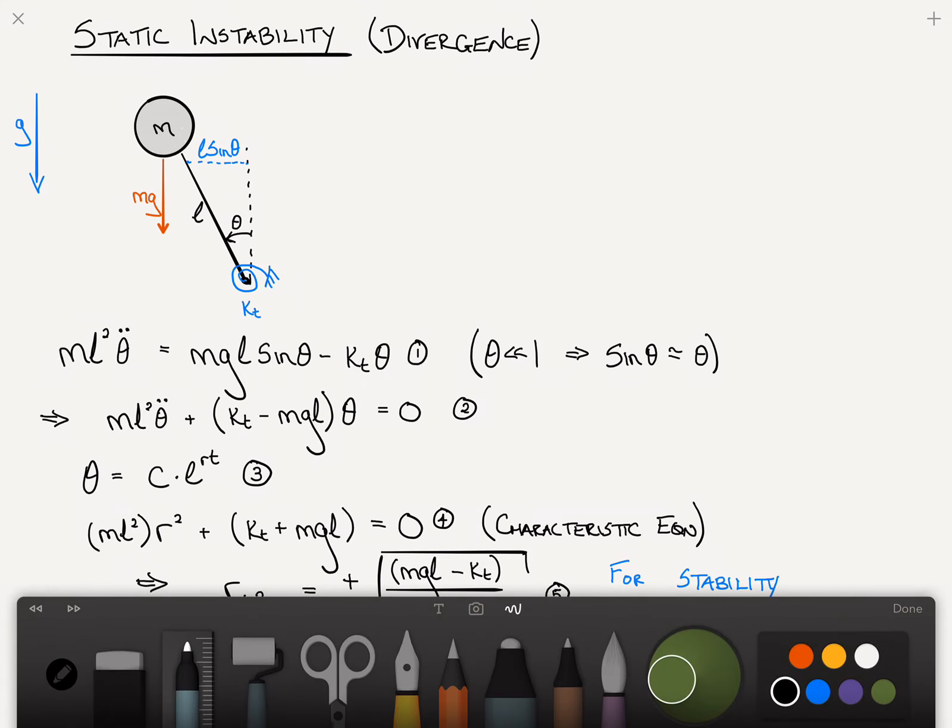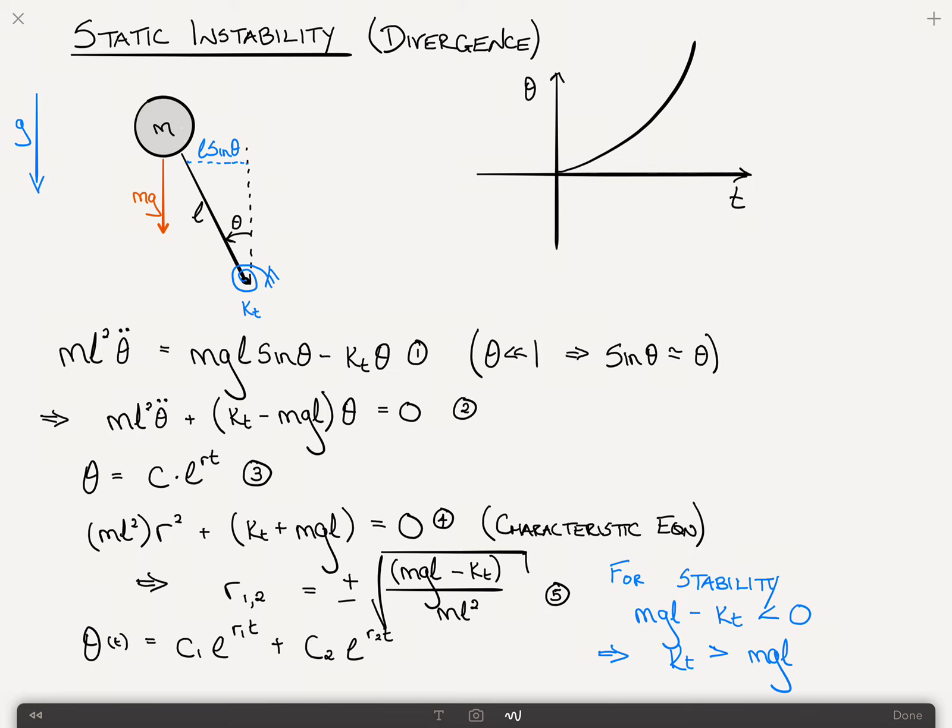Let me just draw it up here so I can keep it on the same page. You're going to just get exponential growth, something that looks like this. If we assume that the y-axis is theta, and the x-axis is time. In order for us to have static stability, or the point at which it becomes statically unstable, is when the coefficient of this term becomes negative.